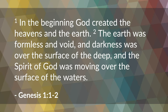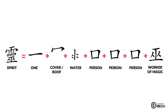From Genesis chapter 1, verses 1 and 2: 'In the beginning, God created the heavens and the earth. The earth was formless and void, and darkness was over the surface of the deep. And the Spirit of God was moving over the surface of the waters.' This Chinese character for 'spirit' looks rather busy — it's made up of the character for 'one,' then a character representing a cover or roof, then water, and then three of the same representative images meaning 'person.' Three people.